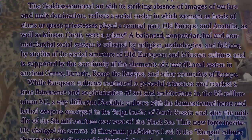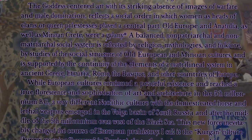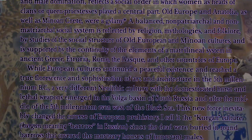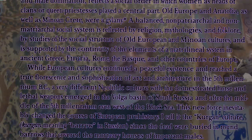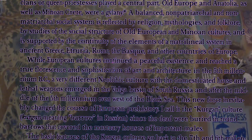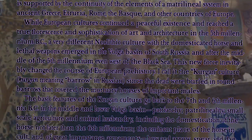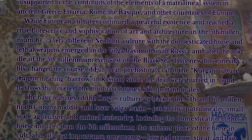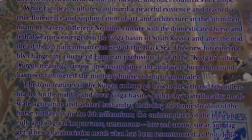The goddess-centered art, with its striking absence of images of warfare and male domination, reflects a social order in which women as heads of clans or queen-priestesses played a central part. Old Europe and Anatolia, as well as Minoan Crete, were gylanic — a society in which neither male nor females dominated. A balanced, non-patriarchal, non-matriarchal social system is reflected by religion, mythologies, and folklore, and is supported by the continuity of the elements of the matrilineal system in ancient Greece, Etruria, Rome, the Basque, and other countries in Europe. While European cultures continued a peaceful existence and reached a true fluorescence of sophistication in art and architecture in the 5th millennium BC, a very different Neolithic culture with the domesticated horse and lethal weapons emerged in the Volga basin of South Russia after the middle of the 5th millennium.